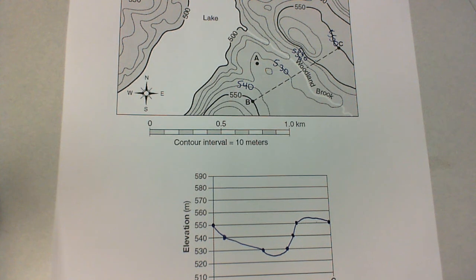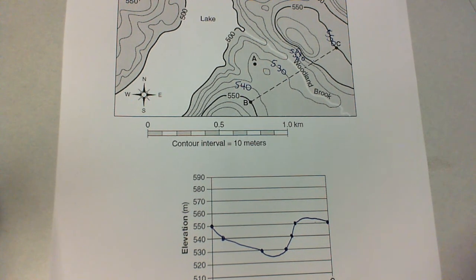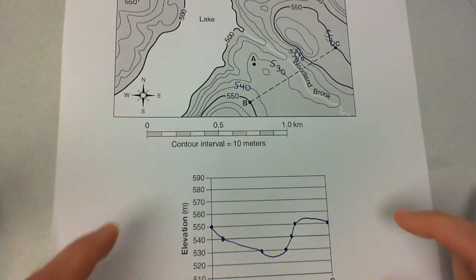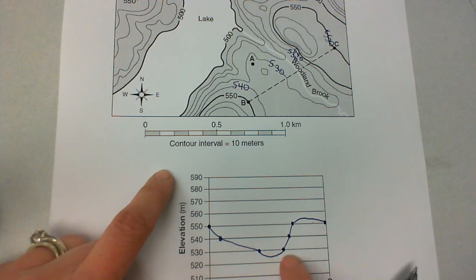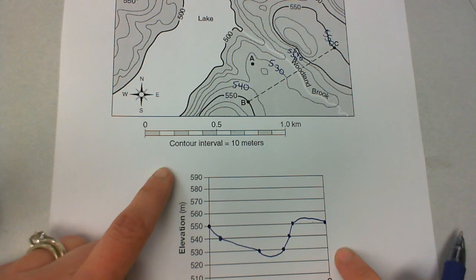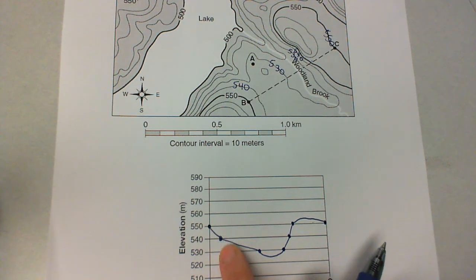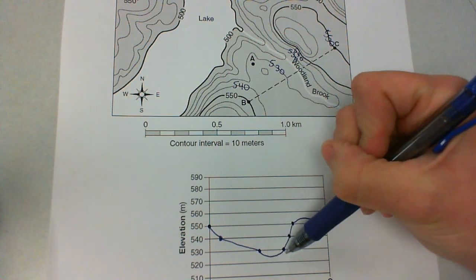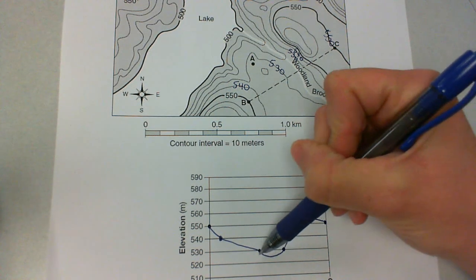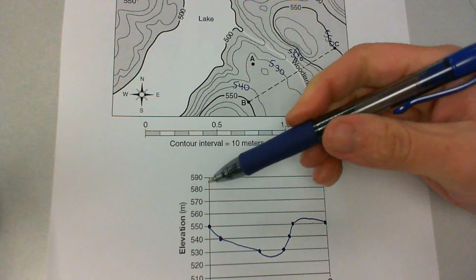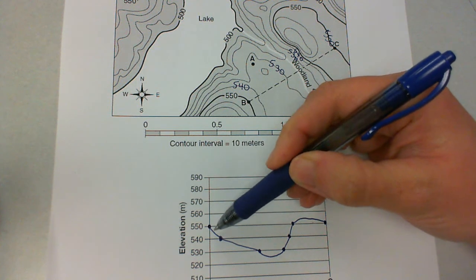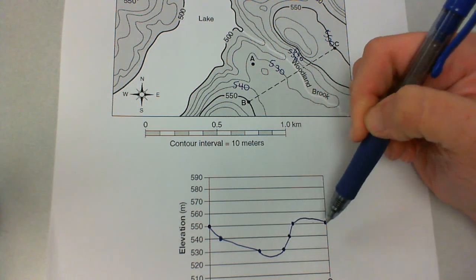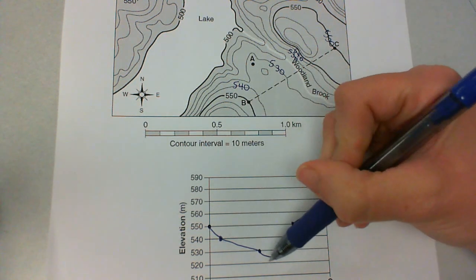When your profiles are graded, there are two main things that are looked at. And that's that your points are exactly where they need to be. A transparency will be put on top of your profile and your points need to be directly underneath the points for the profile key. And the other thing is that your lines are, your points are connected with a smooth line correctly. So by that, meaning they're curved where they should be. They're not flat. They're not going straight across. So just keep in mind that your points, again, those need to be visible also, since that's one of the things that you're being graded on and your line needs to be done correctly.